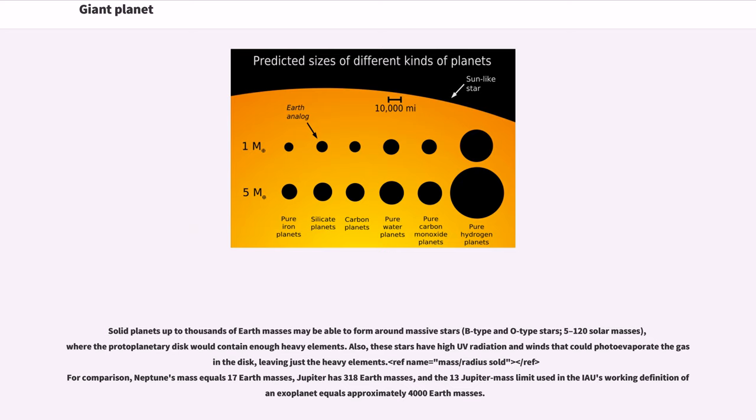Also, these stars have high UV radiation and winds that could photo-evaporate the gas in the disk, leaving just the heavy elements. For comparison, Neptune's mass equals 17 Earth masses, Jupiter has 318 Earth masses, and the 13 Jupiter mass limit used in the IAU's working definition of an exoplanet equals approximately 4,000 Earth masses.